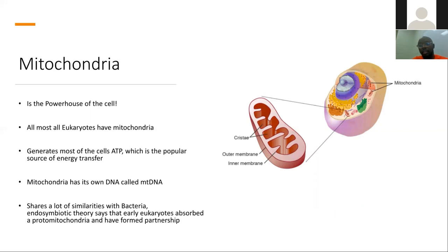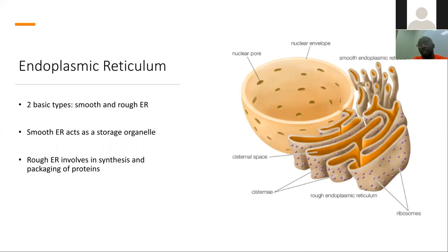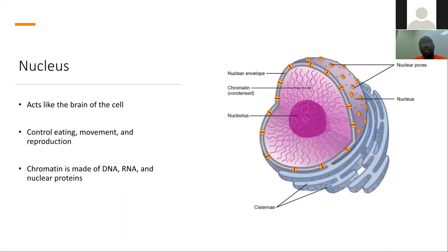The mitochondria has its own DNA, and early scientists think it may have broken off from prokaryotes. There are two types of endoplasmic reticulum: the smooth ER, which acts as the storage organelle of the cell, and the rough ER, involved in the synthesis and packaging of proteins. The nucleus acts like the brain of the cell, controlling eating, movement, and reproduction, and contains chromatin made up of DNA, RNA, and nuclear proteins.